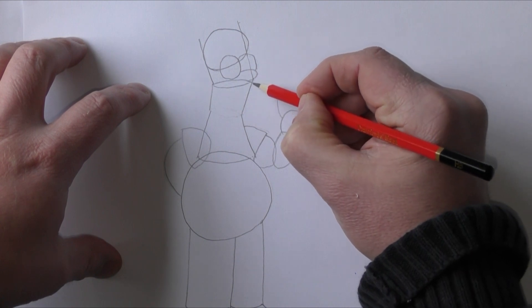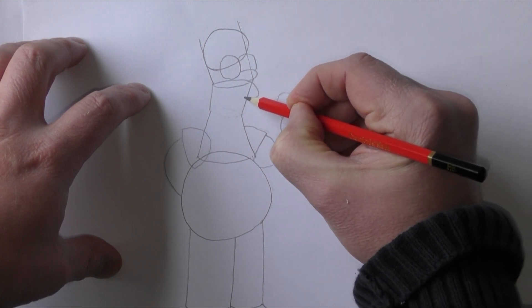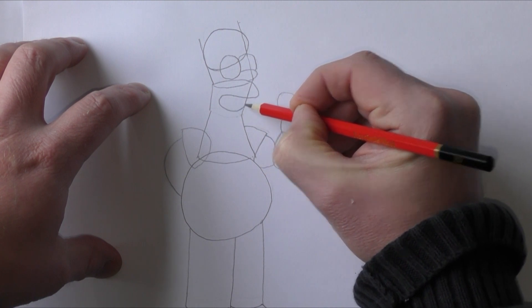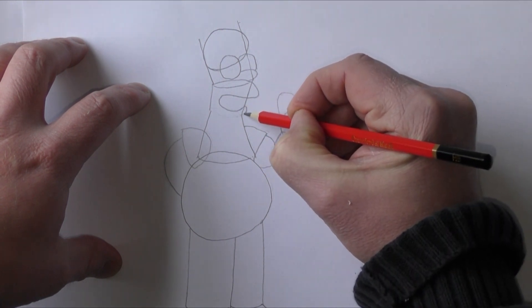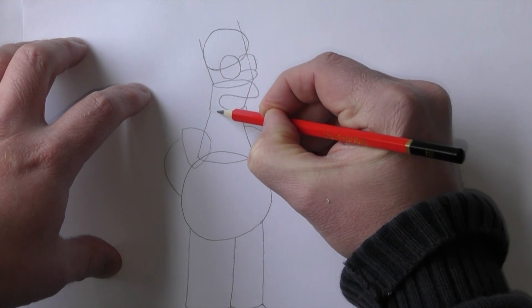Now let's get going on Homer's mouth. Obviously he's got a big grin on his mouth because he's about to eat one of his favorite donuts, so let's give him a great big smile and pull that back round there.